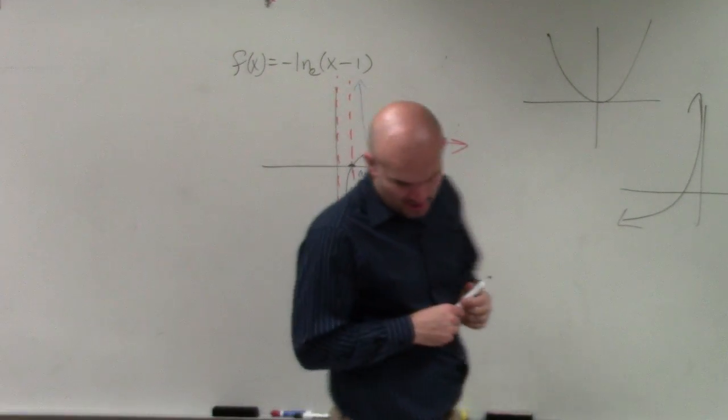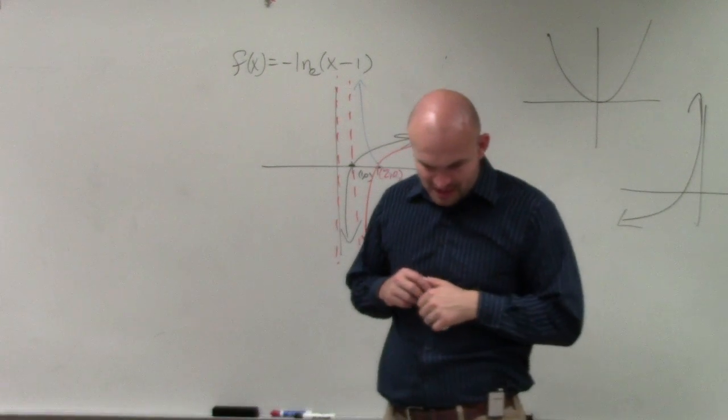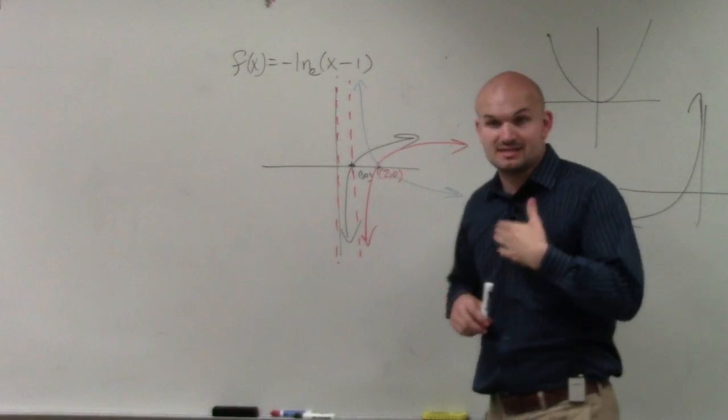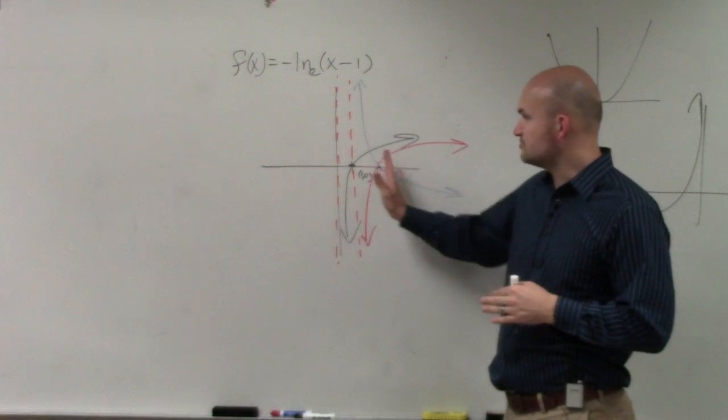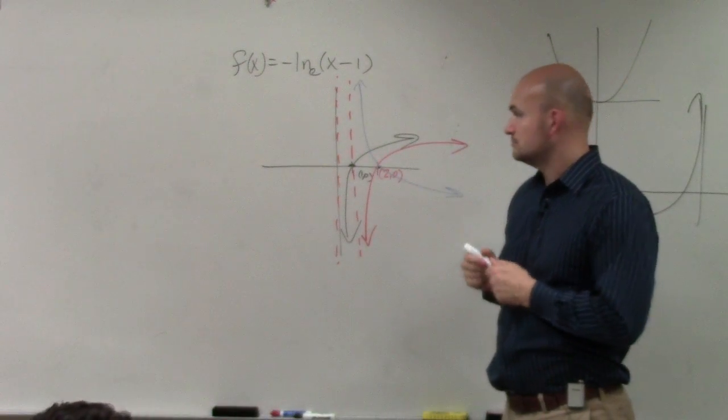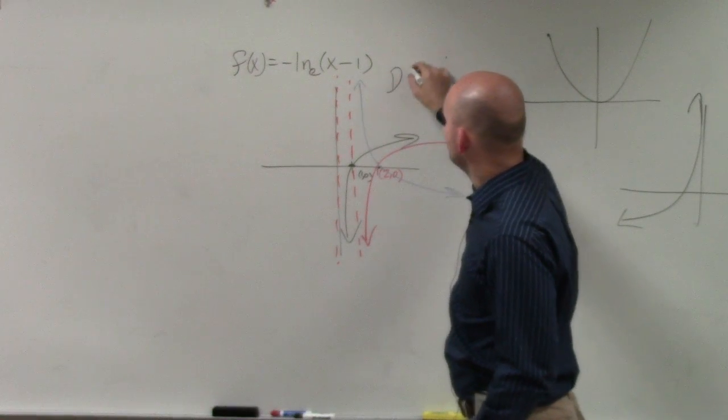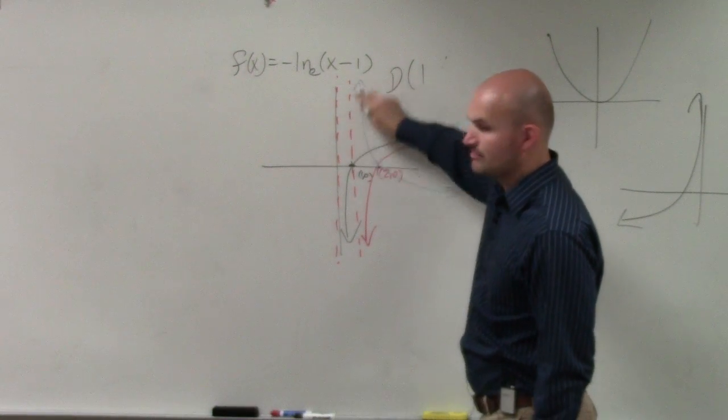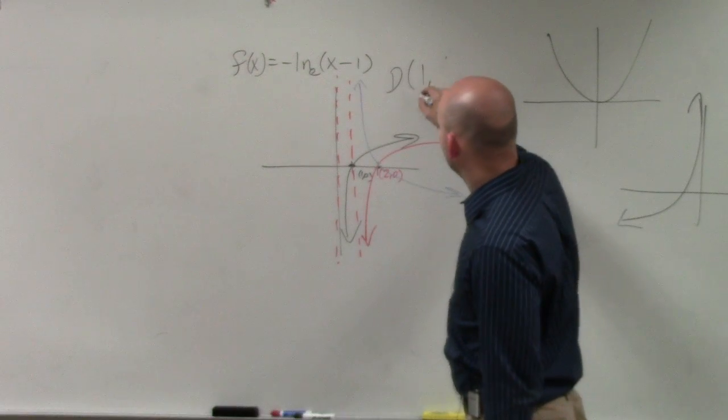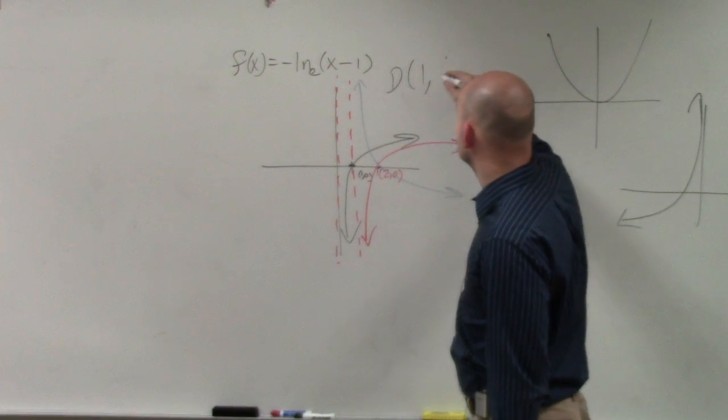So now let's go and answer the questions. Graph the function, analyze the domain. The domain is the set of all x-values. How far to the left does this blue graph go? 1, right? Remember, that's the new asymptote. So 1, how far does it go to the right? Infinity.